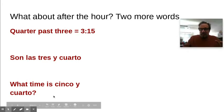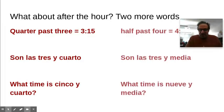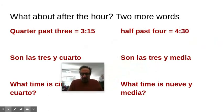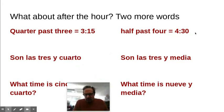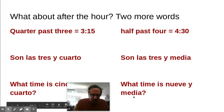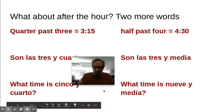And then the last thing is half past. Son las cuatro y media. Half past four, four thirty. Because in English it's the same thing. Half past four is four thirty. So son las tres y media is half past three. What time is nueve y media? Nueve y media. Half past nine.